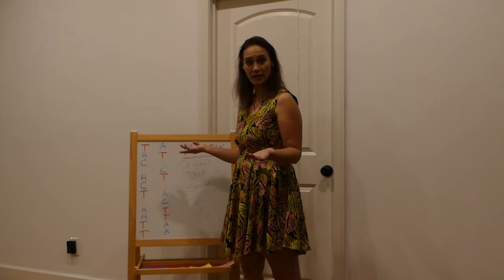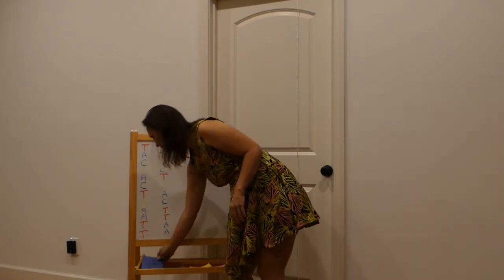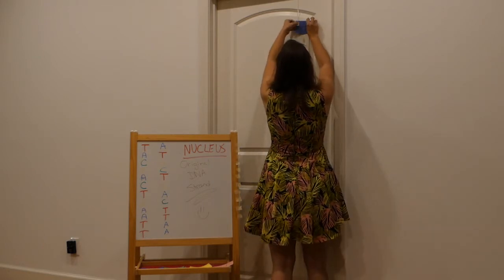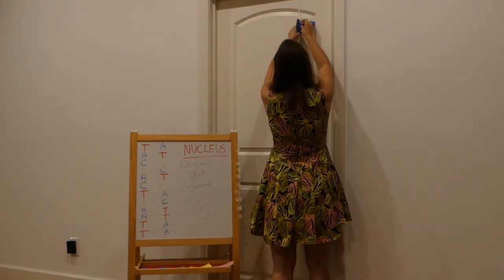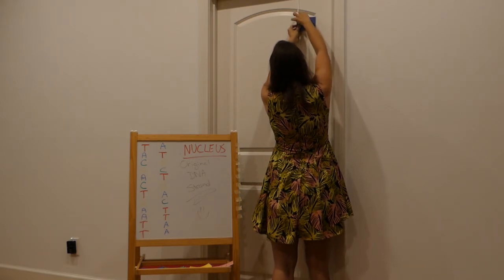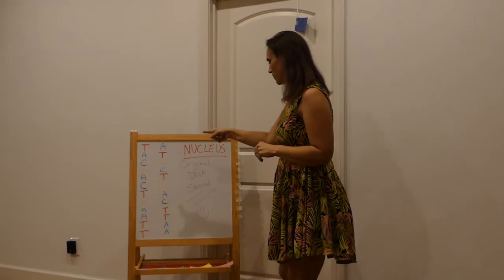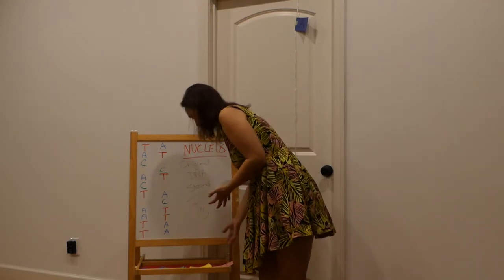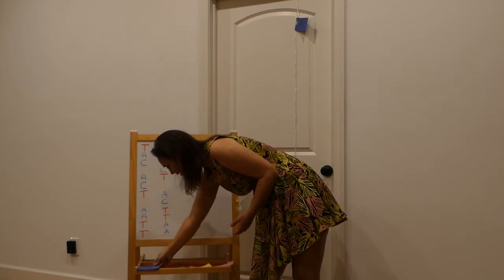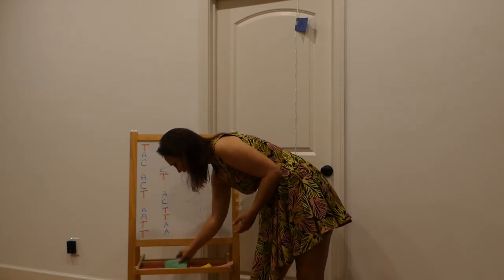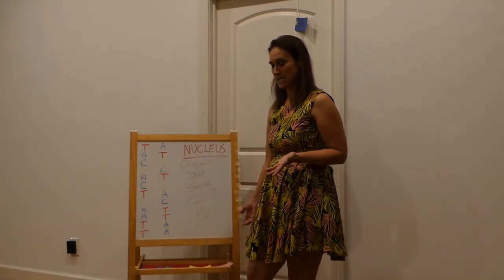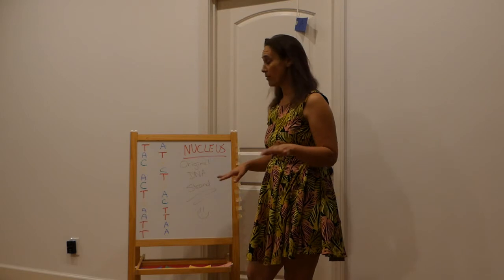T goes with A — we already know that, so A is going to be first on my list. Next up is A. What goes with A? T. I have A's, C's, G's, and U's. I don't have a T. Okay, we'll just skip that when I come back to it.